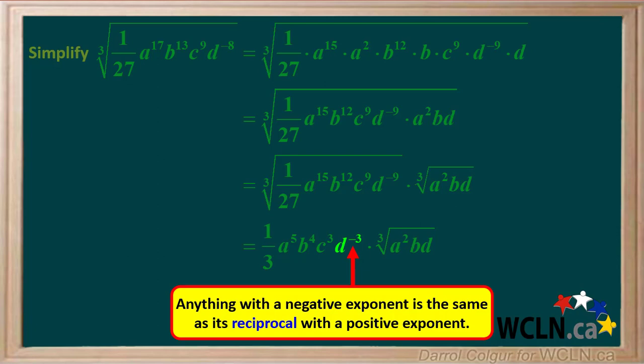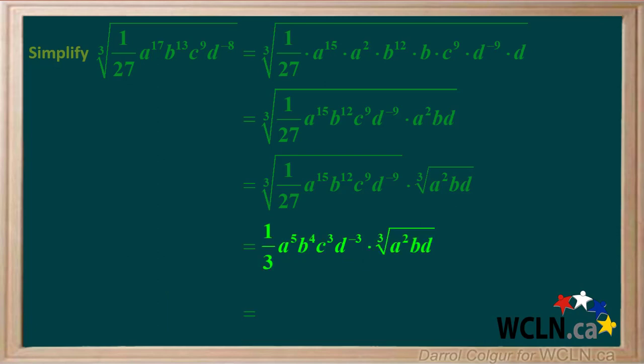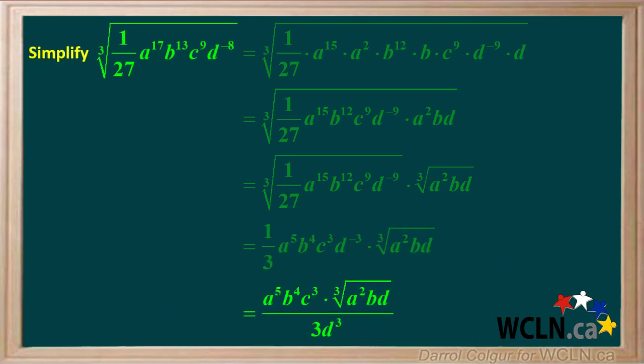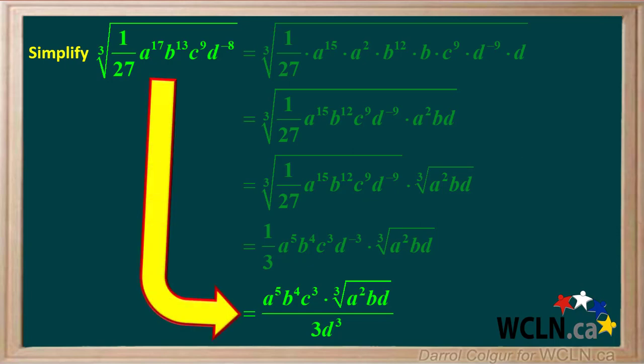d has an exponent of negative 3, which is the same as the reciprocal with the exponent positive 3. So this expression can be written with a positive exponent. And we can state that the cube root of 1/27th a to the 17th b to the 13th c to the 9th d to the negative 8th can be simplified to this expression.